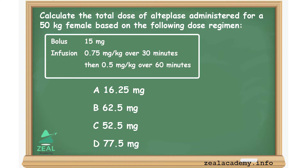Calculate the total dose of alteplase for a 50 kg patient based on the following dose regimen: bolus 15 mg, infusion 0.75 mg per kg over 30 minutes, then 0.5 mg per kg over 60 minutes. Option A: 16.25 mg, Option B: 62.5 mg, Option C: 52.5 mg, Option D: 77.5 mg.